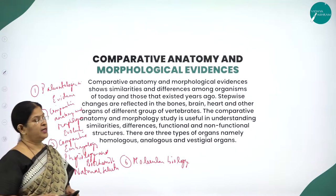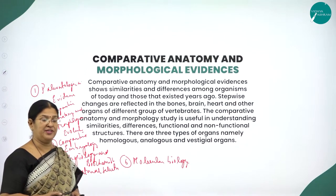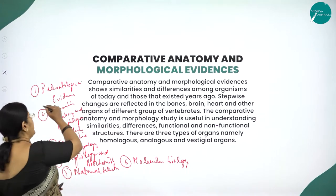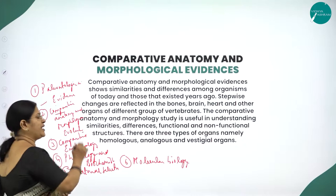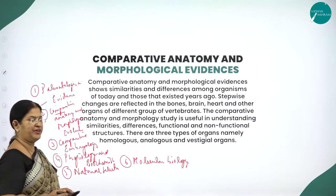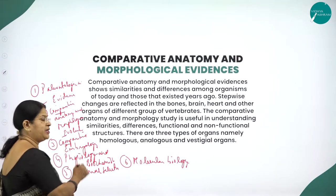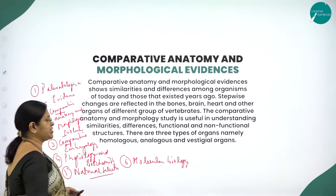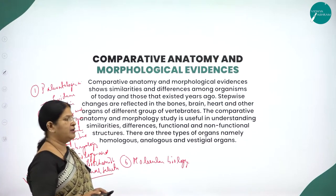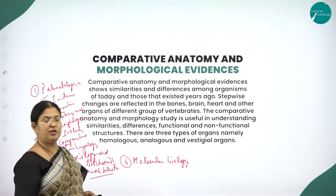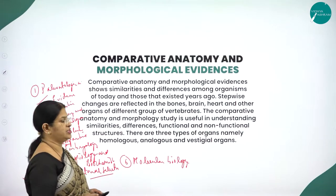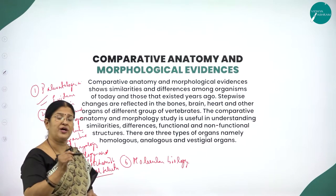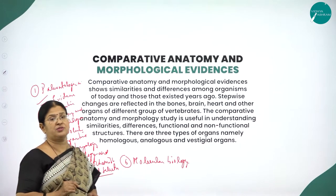So there are many evidences from all branches of biology — paleontological evidence, comparative anatomy and morphological evidence, comparative embryology, physiology and biochemistry, natural selection, and molecular biology. In the last session I explained paleontological evidence: what is paleontology — the study of fossils. So fossil study is one basis to prove the process of evolution.